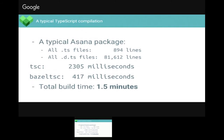TSC took 2.3 seconds for a typical Asana package. With Bazel TSC, the little tool we wrote, it took 400 milliseconds. This cut our total build time from five minutes down to about a minute and a half. I initially called it Bazel-TSC with a dash, but was getting mysterious errors — it turns out anything named 'Bazel-' was getting deleted somewhere. So I changed the name.